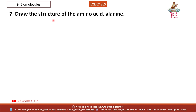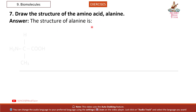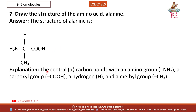Question 7: Draw the structure of the amino acid alanine. Answer. The central alpha-carbon bonds with an amino group (NH2), a carboxyl group (COOH), a hydrogen (H), and a methyl group (CH3).